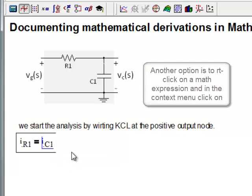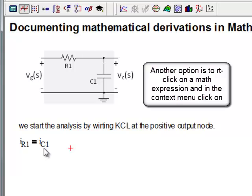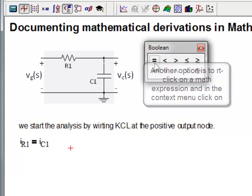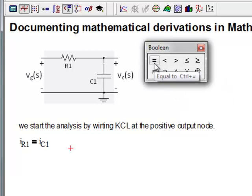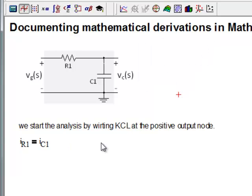What we want to use in this case is actually the Boolean equality, which is control equal. And you can find it right up here. It's kind of a thicker equal sign. And you see it's accessed by doing control equal.